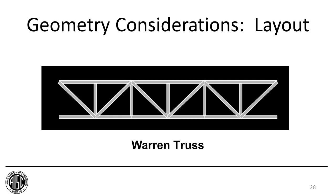Finally, we have the Warren truss, in which the diagonals resist both tension and compression and the load flow stays in the diagonals. The verticals are there to reduce the unbraced lengths of the chords or to resist a point load coming in.